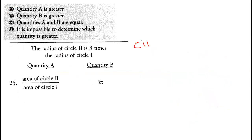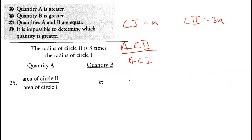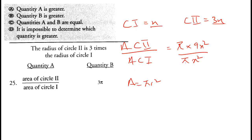The radius of circle 2 is 3 times the radius of circle 1. Let circle 1 have radius x, so circle 2 has radius 3x. The area of circle 2 divided by area of circle 1 equals π(3x)² over πx², which is 9x² over x², giving 9. Now 3π equals approximately 3 times 3.142, which is greater than 9. Therefore quantity B is greater than quantity A. Option B is correct.